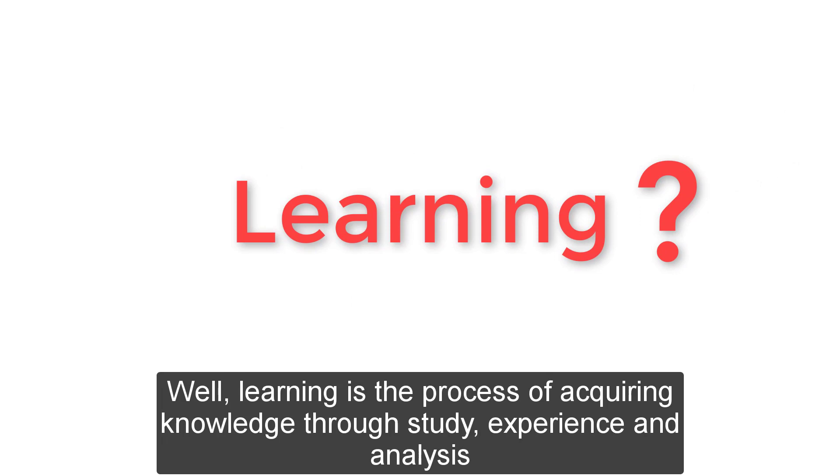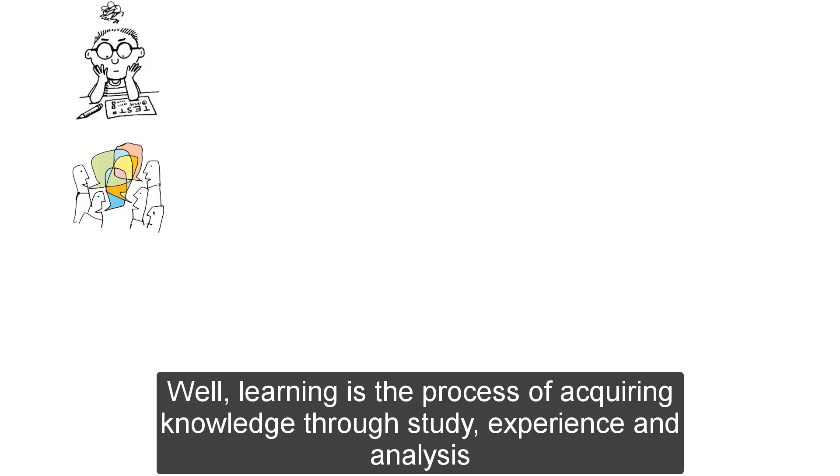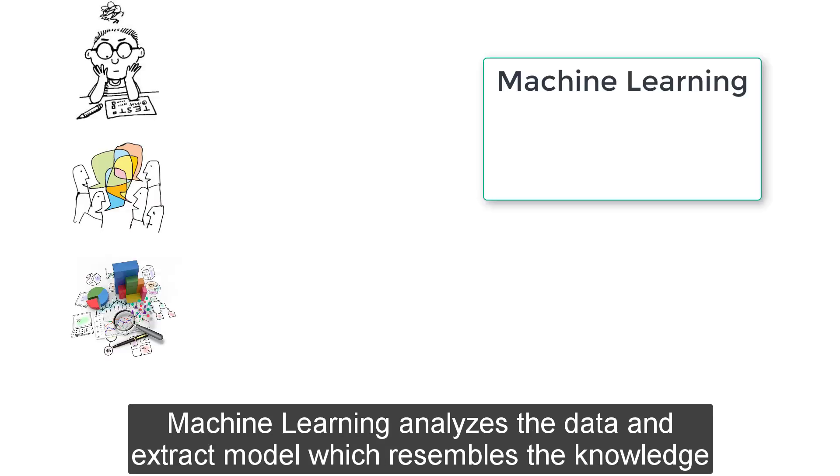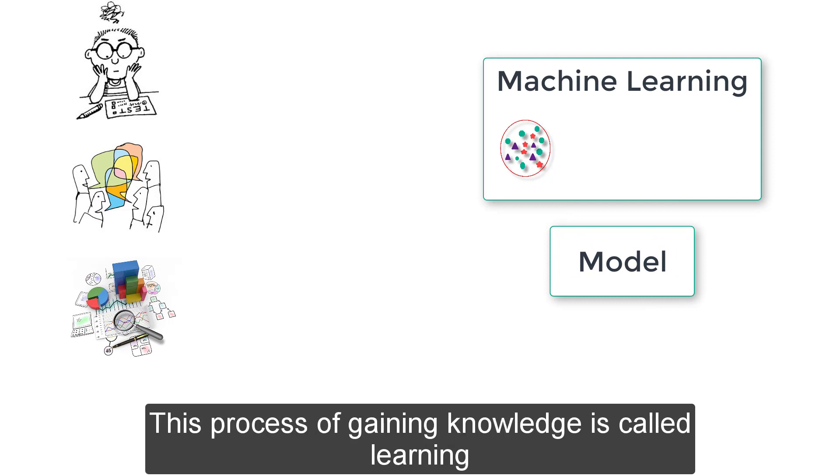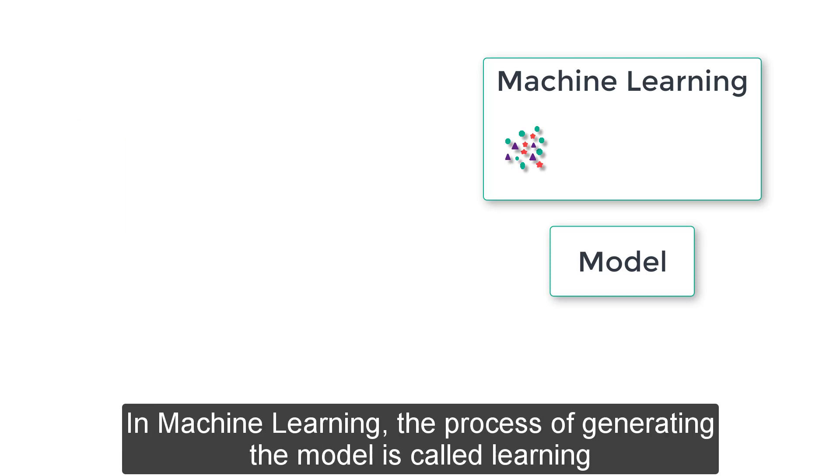Well, learning is the process of acquiring knowledge through study, experience and analysis. Machine learning analyzes the data and extracts model which resembles the knowledge. This process of gaining knowledge is called learning. In machine learning, the process of generating the model is called learning.